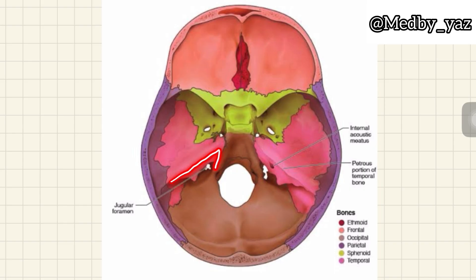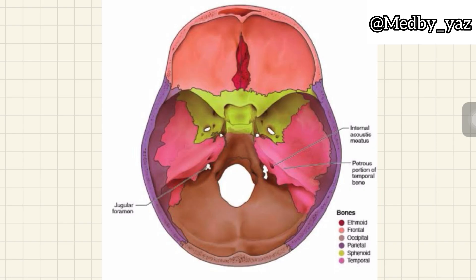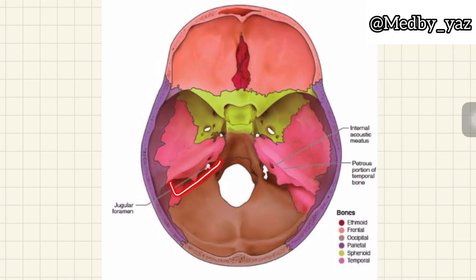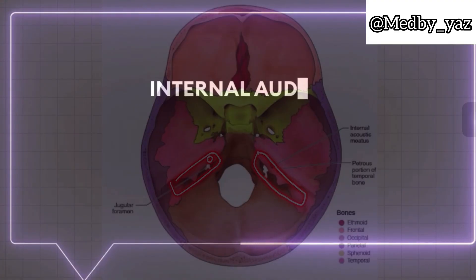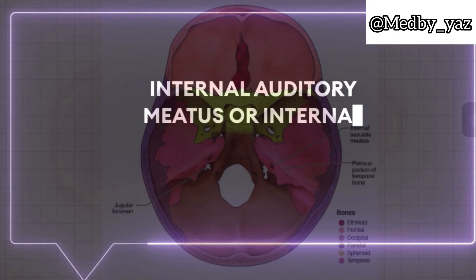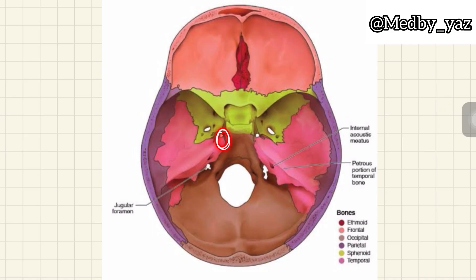The posterior slant articulates with the occipital bone. The petrous bone continues as the mastoid bone laterally. The posterior slant contains a canal known as the internal auditory meatus, or internal auditory canal.